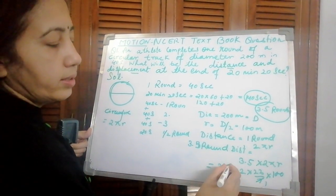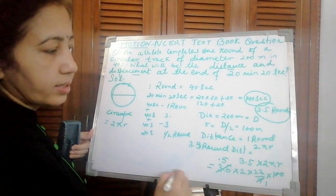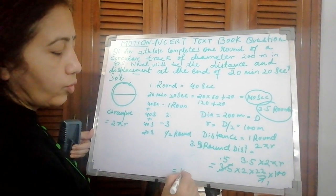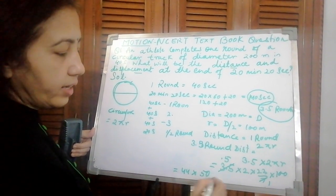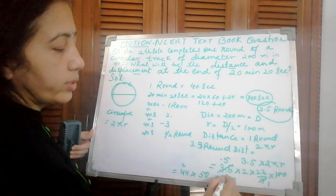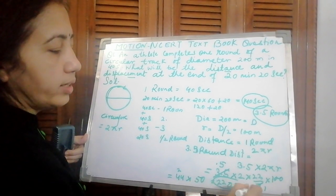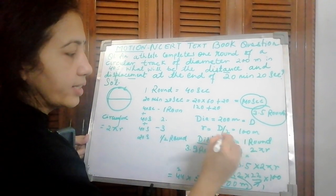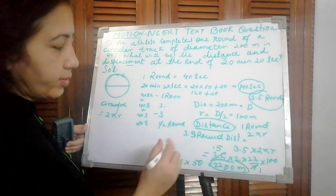7 cancels with 3.5 giving 0.5. Multiply this whole: 44 into 50, that is 5 for the 20, 2200 meters. This is your total distance. 3.5 rounds, he covered this much distance.